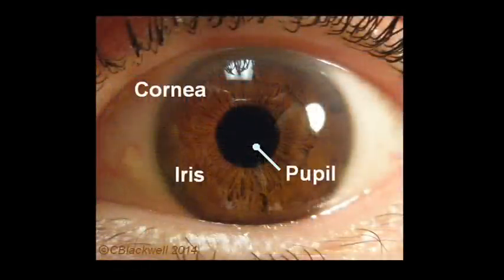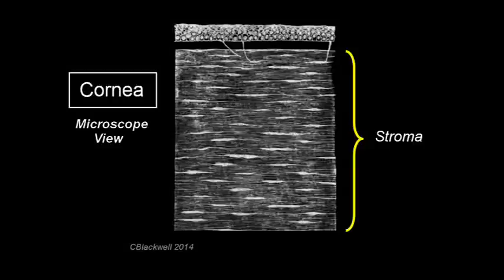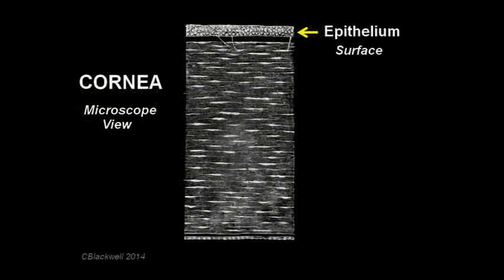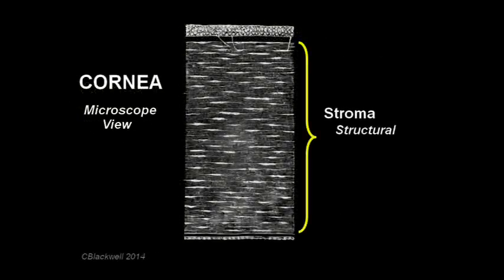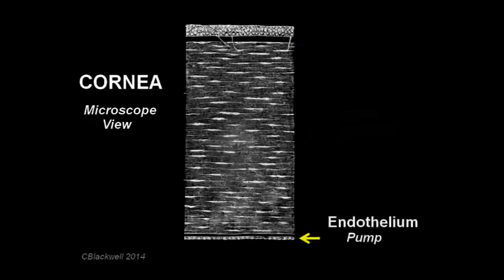In summary, though your cornea is made out of the same tissue as your skin, it is remarkably clear. This is due mostly to the regular arrangement and spacing of collagen fibers. We looked at the different layers of the cornea and what each did, from surface to inside, in detail.